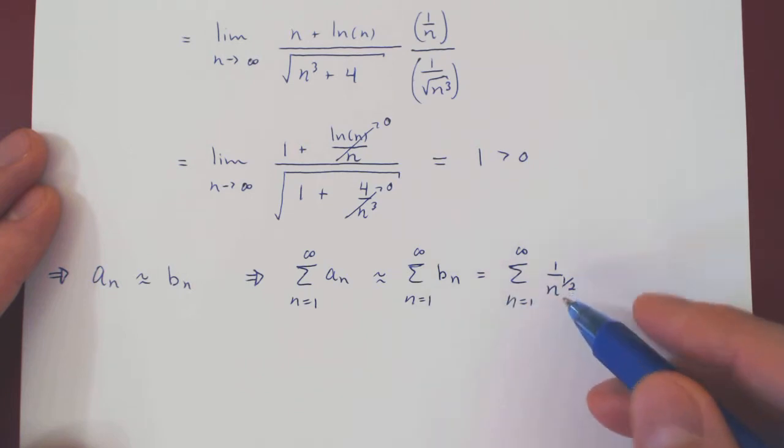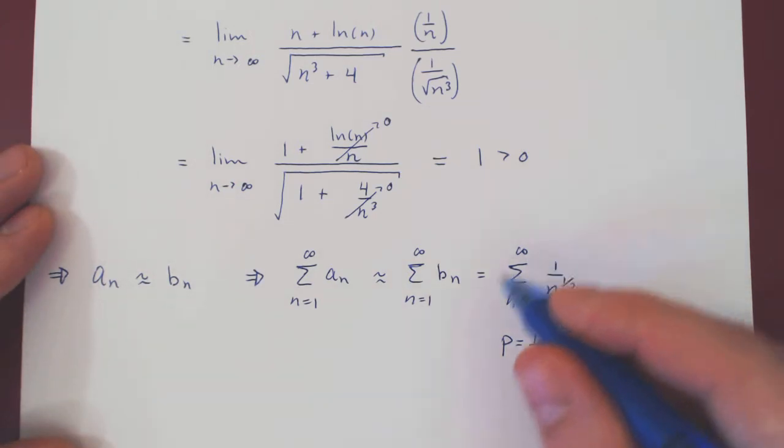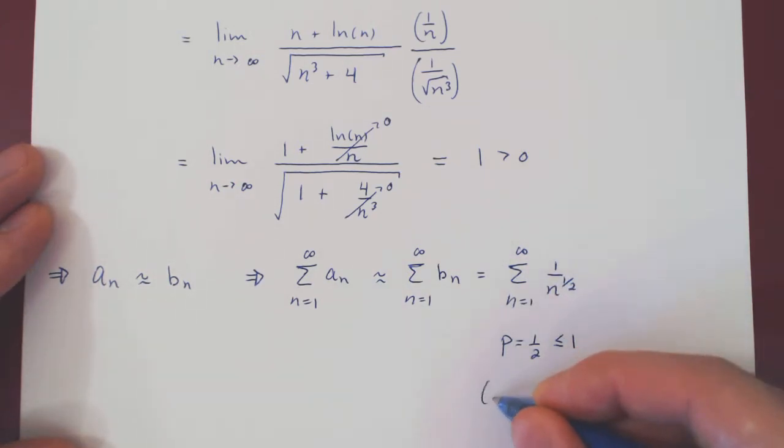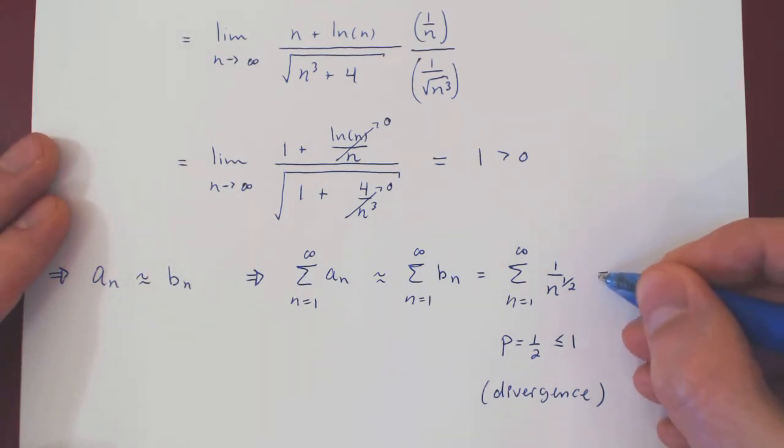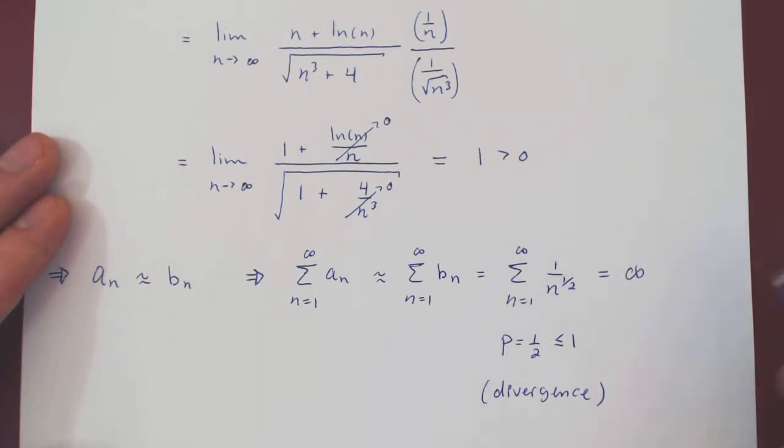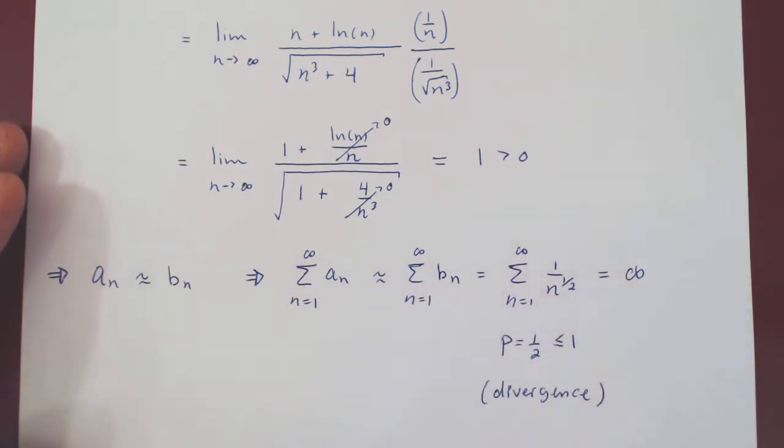Again, this is now a simple p-series, where p equals 1 half. So, what we have, the key point is, this is less than or equal to 1. And recall, a p-series only converges if p is strictly larger than 1. So, this p-series diverges. So, we have divergence. But when you have a sum of positive terms that diverges, it can only do so by blowing up to infinity. So, the initial series is approximately infinite. Therefore, it is infinite as well.